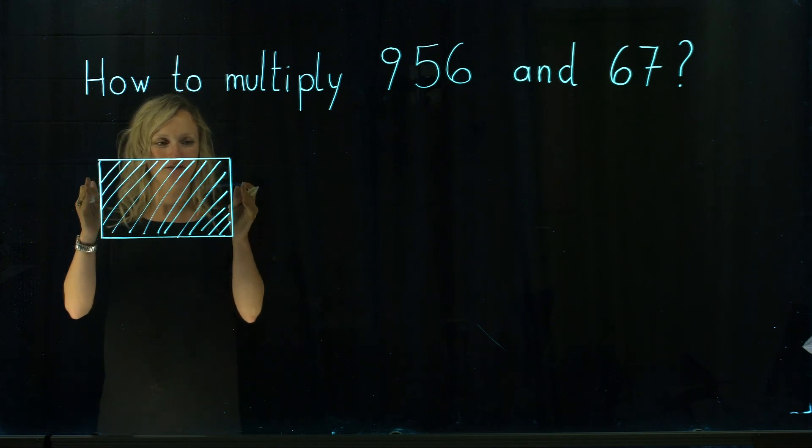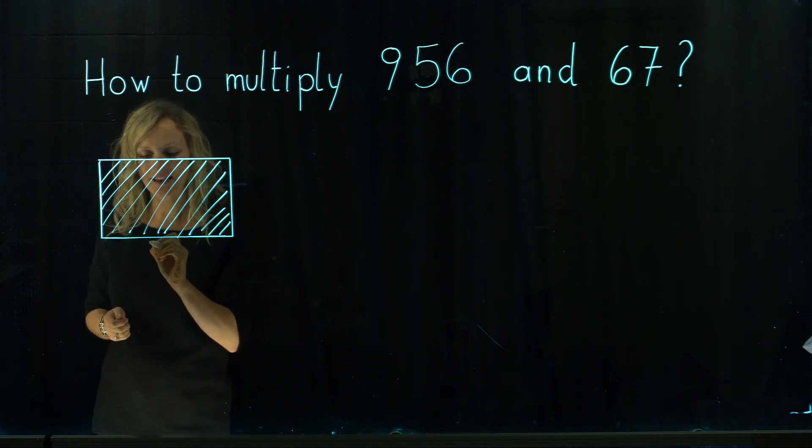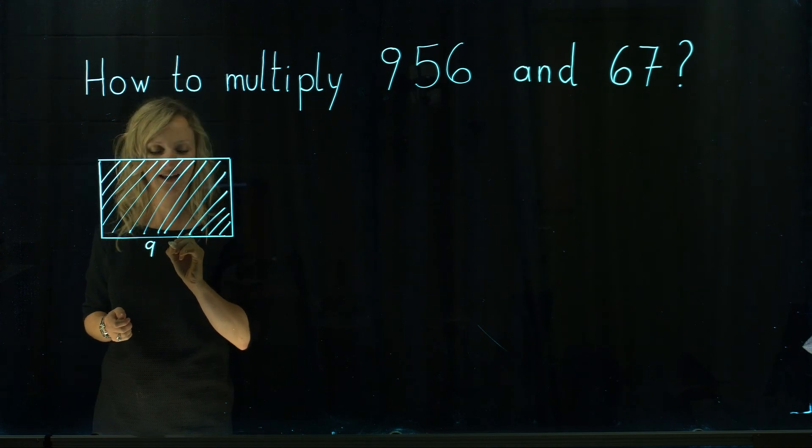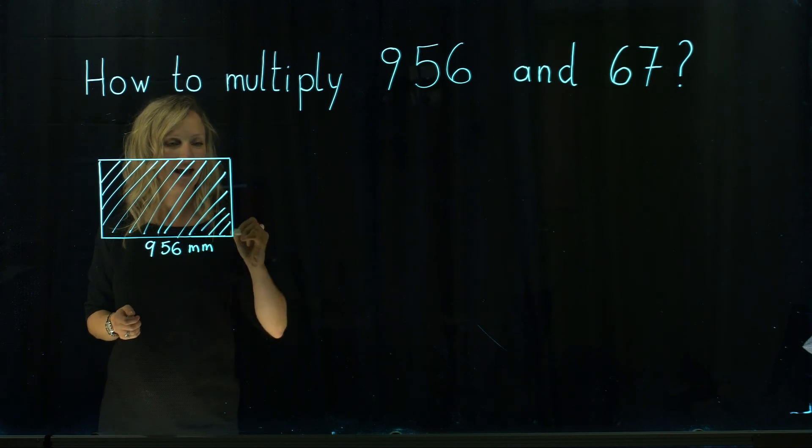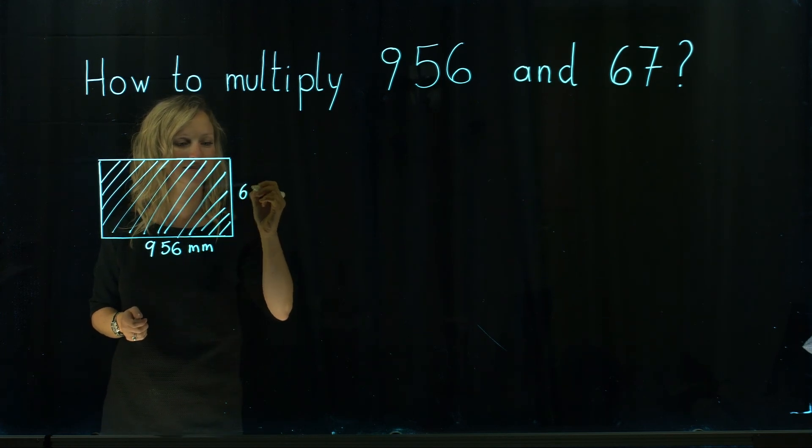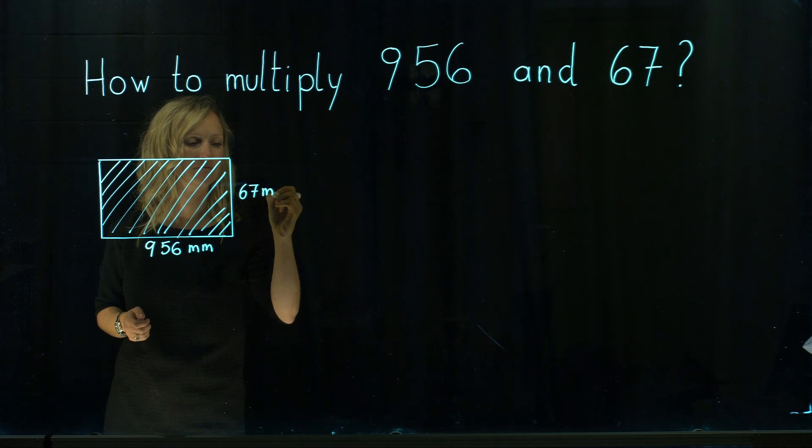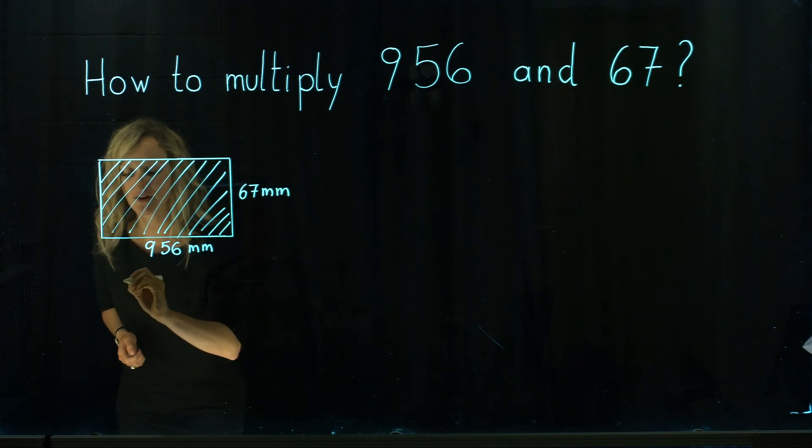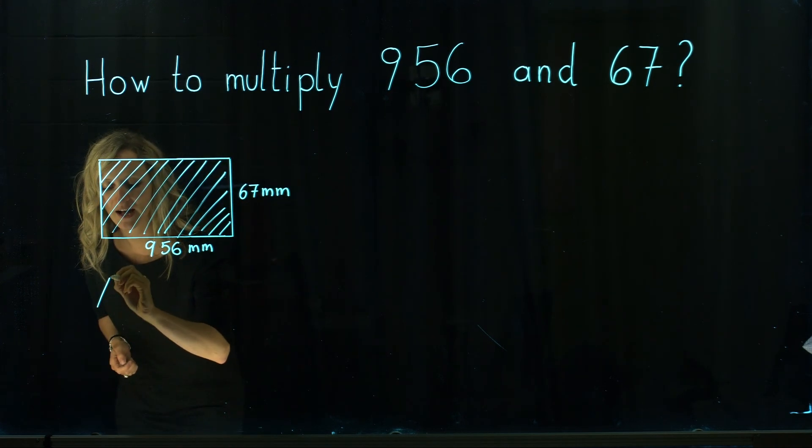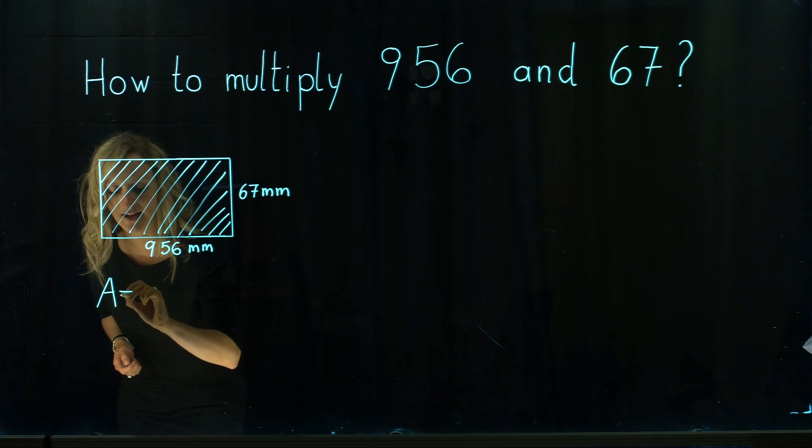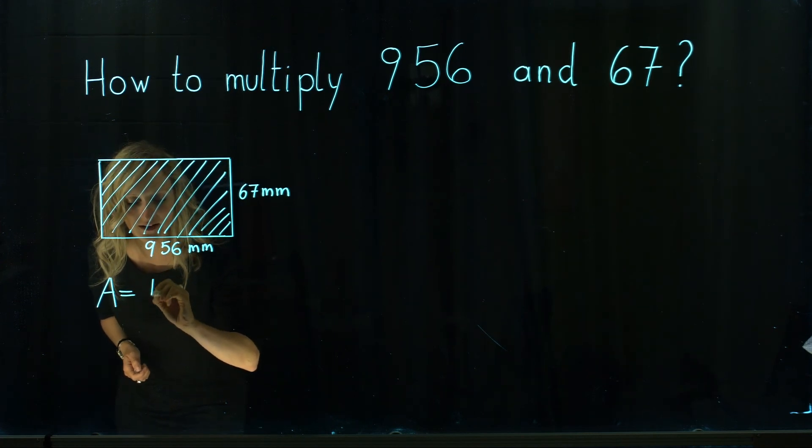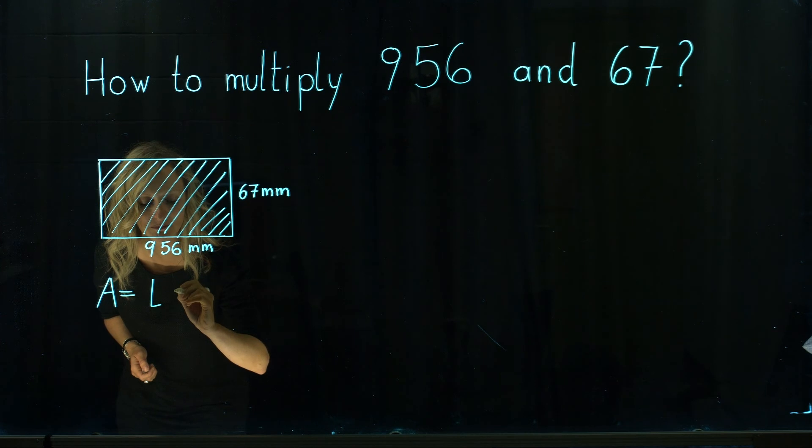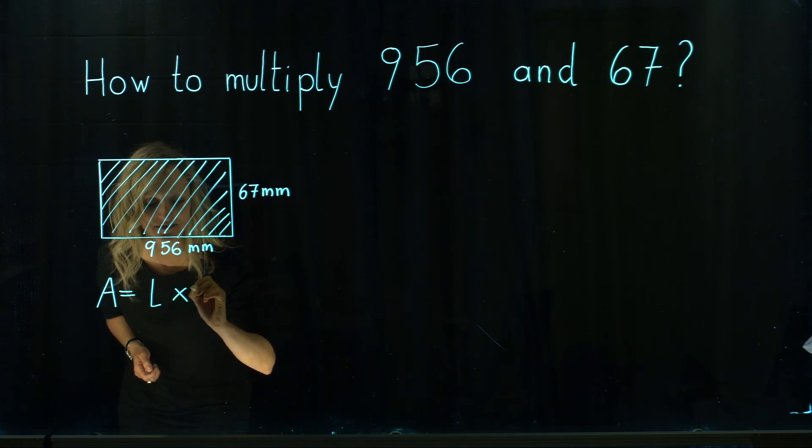We can see that we have a rectangular shape here and the length of it is 956 millimeters and the width is 67 millimeters. We are looking for an area. So how do we calculate the area of the rectangle?